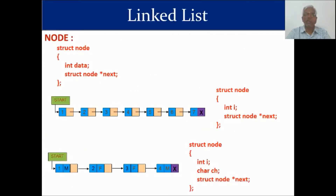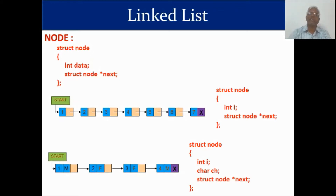Now the important part — how to define the node structure in code. We use the keyword 'struct' because each node comprises two parts: one data part and one pointer. Since it is a collection of dissimilar data items, we use a structure. The first portion represents the data, and the second part — which is very important to understand — is declared as 'struct node star next'.